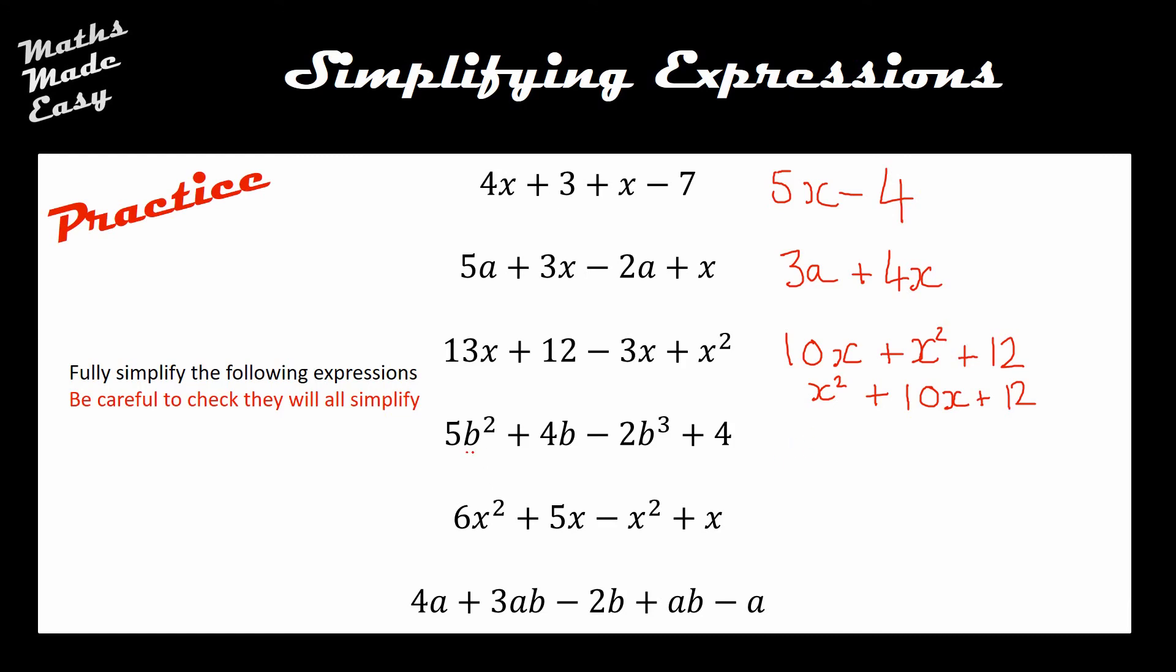On to the fourth one, I can see that I've got b squareds, b's, b cubed, and fours, so there are no categories of terms here which are the same. In other words, this one already is simplified and there's nothing more that I can do to that one. Moving on to the next one, I can see I've got 6x squared take away 1x squared which is positive 5x squared. I can see that if I look at my x's I've got plus 5x plus another x, so that's going to give me a total of positive 6x's.